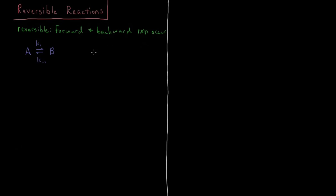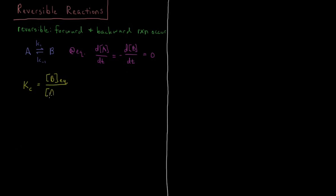We're interested in the equilibrium of this reaction. At equilibrium, the time derivative of the concentration of A — which equals minus the time derivative of the concentration of B through stoichiometry — is equal to zero. Because at equilibrium the reaction is no longer changing and all thermodynamic values have reached their minima; you have a minimum Gibbs energy. The equilibrium constant for this reaction in terms of concentrations is the product raised to the power of its stoichiometric coefficient, [B], divided by the reactant [A].